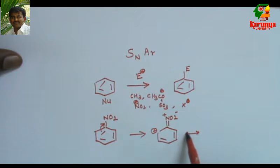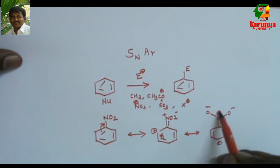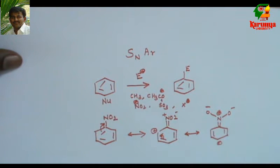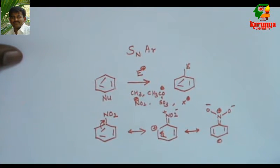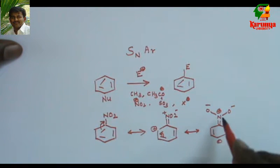These are the resonant structures. Now we can find plus charge in the ortho and para position of this nitro group. Ortho position and para position, there is positive charge because of the electron withdrawing group.